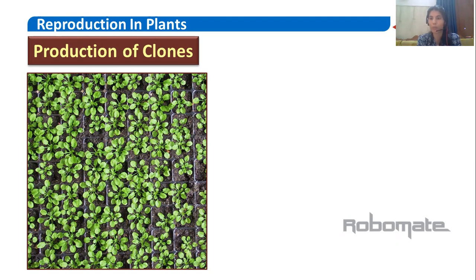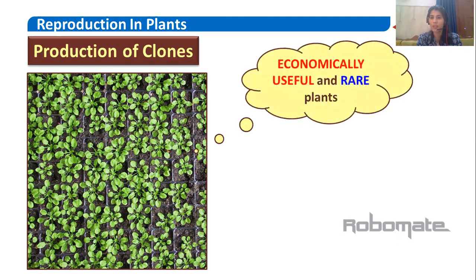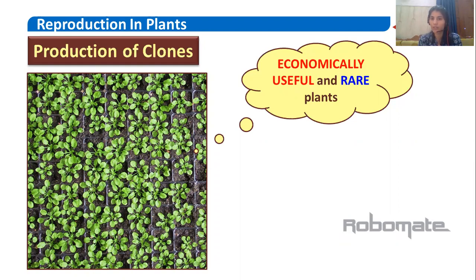Through tissue culture technique or micropropagation, we can produce clones. We can not only produce multiple clones of a regular plant, but also produce clones of economically useful and rare plants at a large scale. This is very helpful and essential for the conservation and multiplication of such plants.